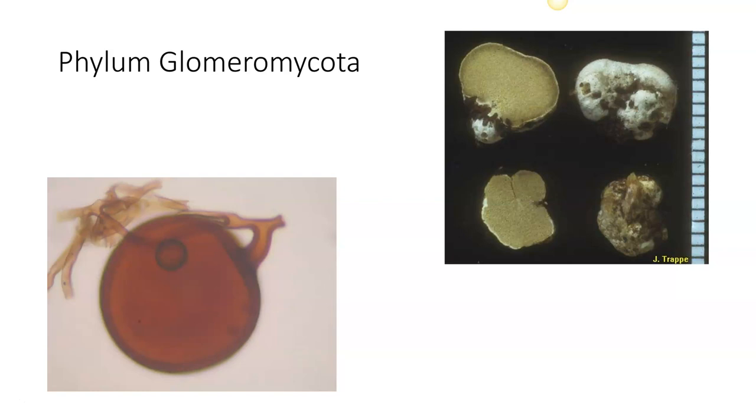The haustoria that are formed by them look like little Christmas trees on the inside of roots. There are two basic groups within this phylum. One of the groups produces single spores, the other group actually forms a sporocarp.